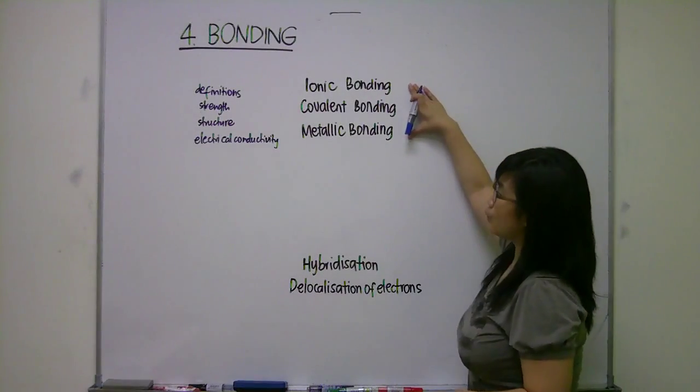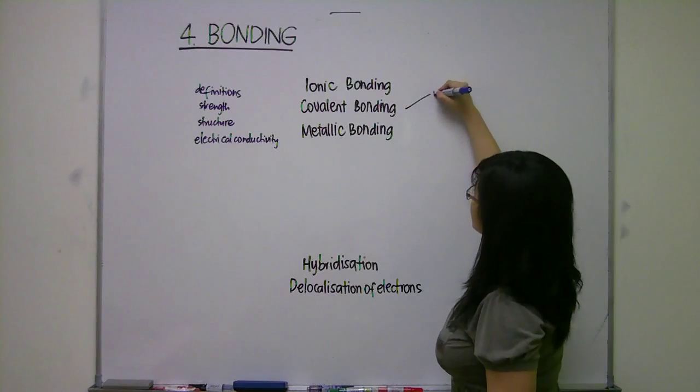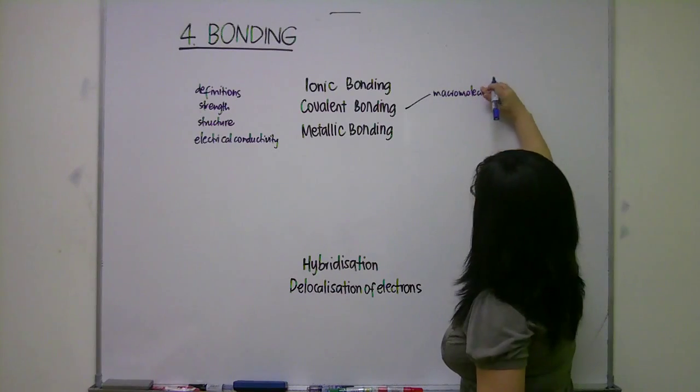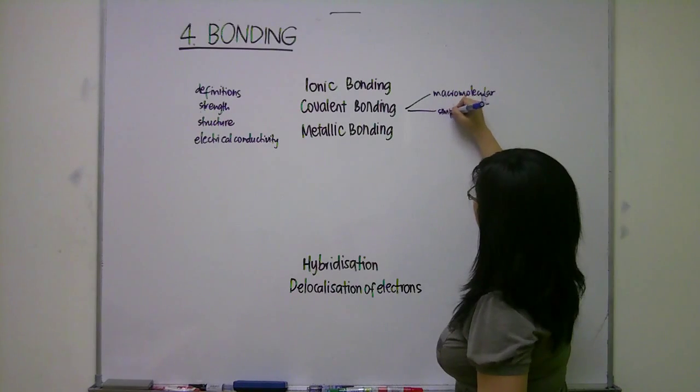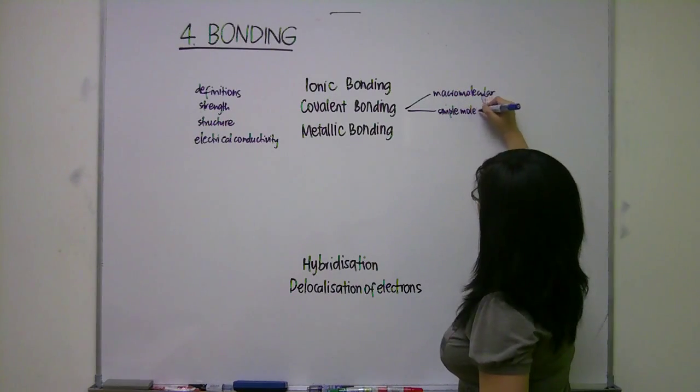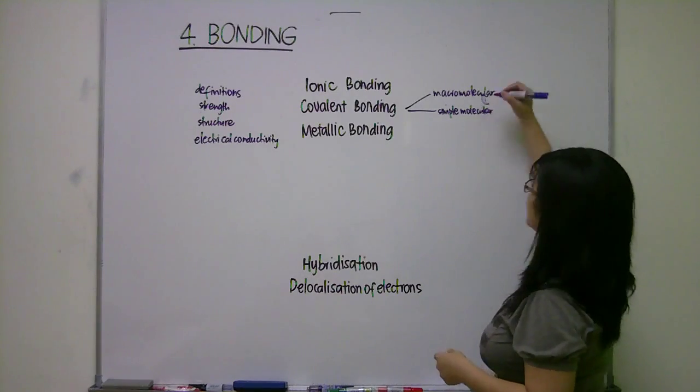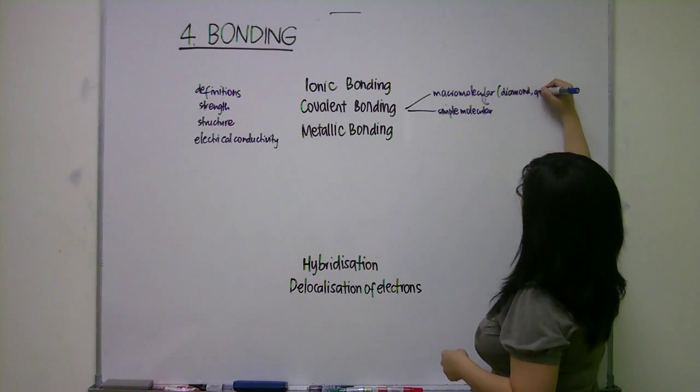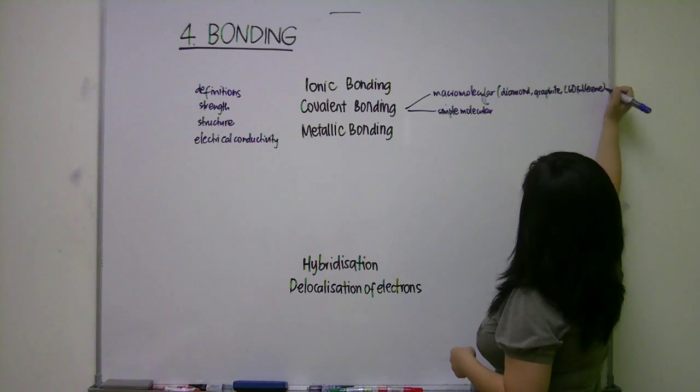Out of these three, we will spend most time on covalent bonding. We know that there are two types: macromolecular and simple molecular. For macromolecular, we'll be discussing about diamond, graphite, and C60-fullerene.